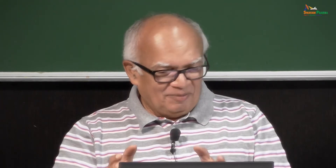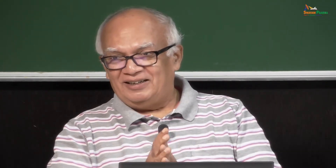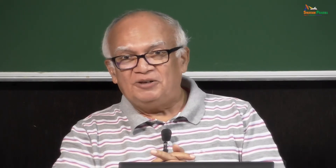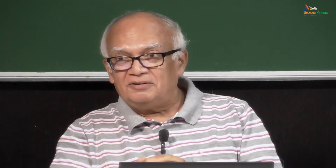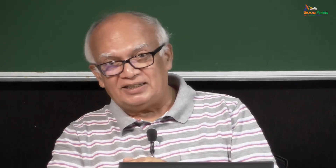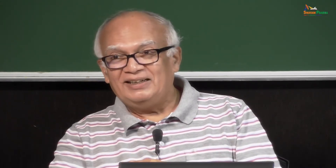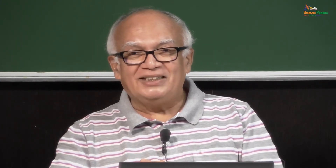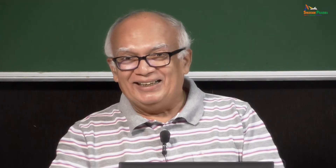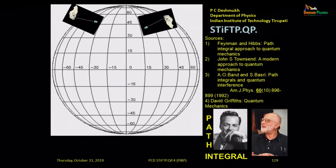I remember reading somewhere on the internet — I forget the name of the person — but somebody asked Feynman: can you tell me in simple terms why spin-half particles obey Fermi-Dirac statistics? And Feynman said, okay, let me think about it. After a day or two he said: no, I cannot do it. But I think he had an extraordinary mind.